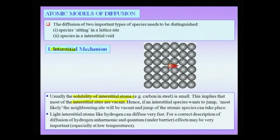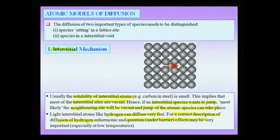If an interstitial species wants to jump, most likely the neighboring site would be vacant and the jump can take place. This jump requires what is known as an activation barrier. There are also cases where motion of the interstitial atom takes place by tunneling mechanisms, especially for hydrogen, which can diffuse very fast and for which quantum under-barrier effects may become important at low temperatures.